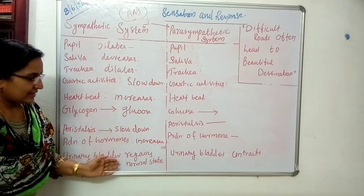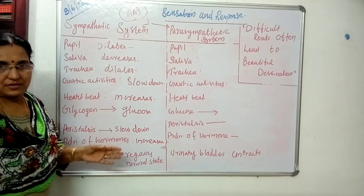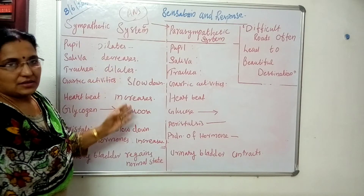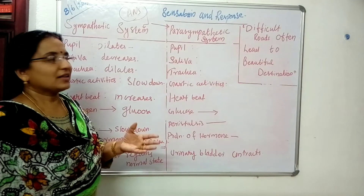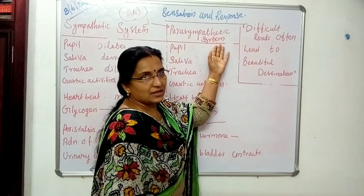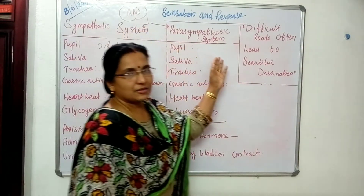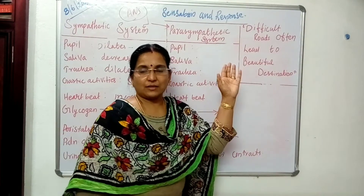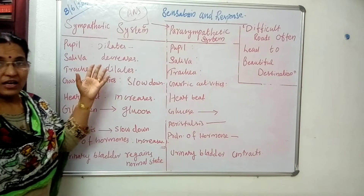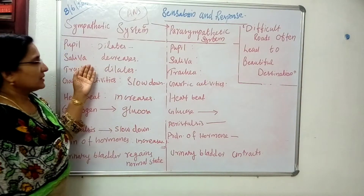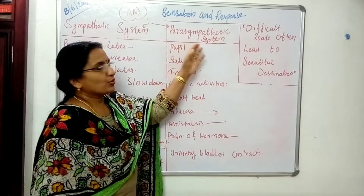If these physiological activities continued, it would damage our internal organs. So our body has another system called the parasympathetic system. The antagonistic action of the sympathetic and parasympathetic systems helps our body function properly. Antagonistic means opposite — whatever physiological activities take place during the sympathetic system, the opposite actions take place during the parasympathetic system.